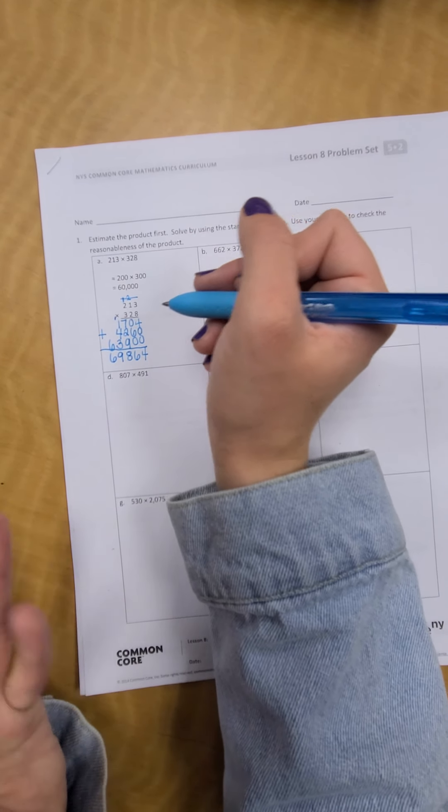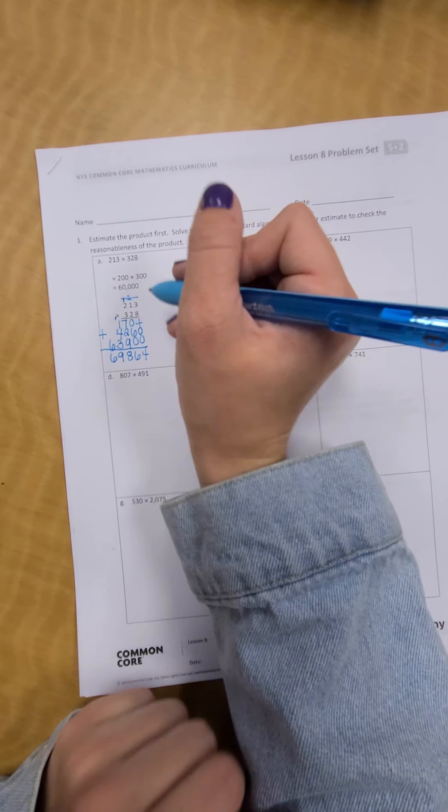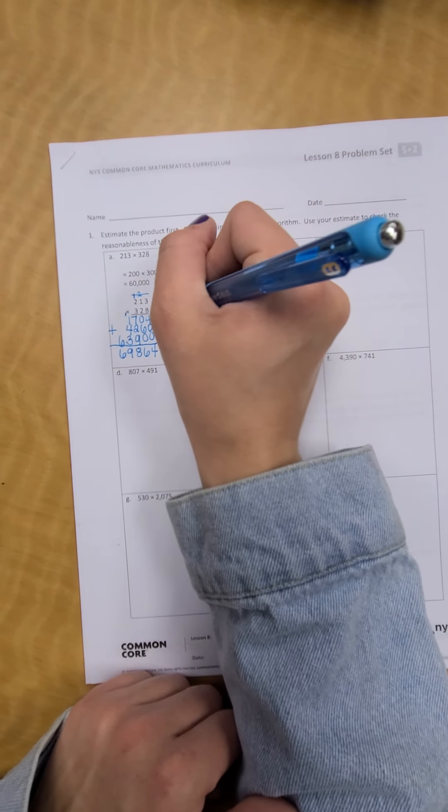So, it's around, not quite close, but it's around where our number would be. So, we know our answer is reasonable. So, we would check it.